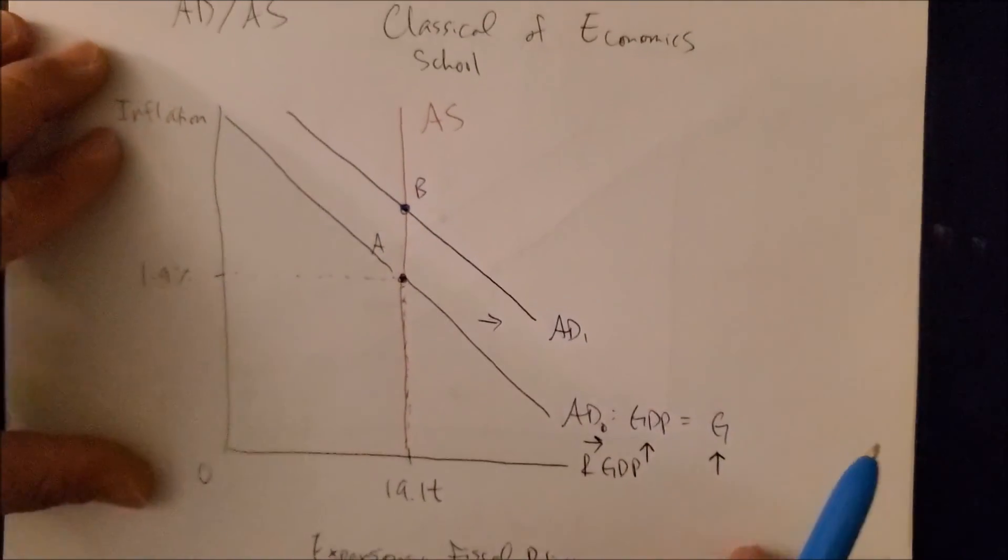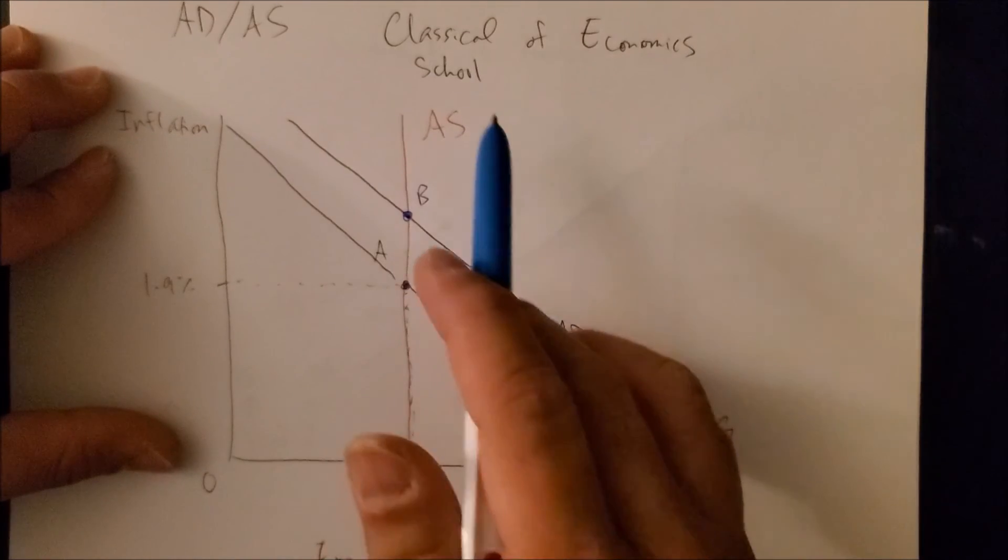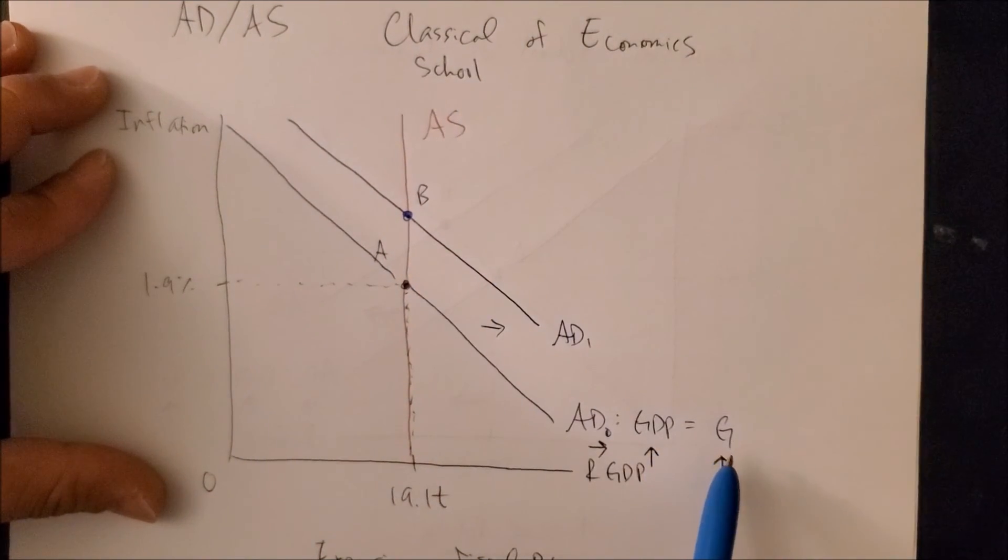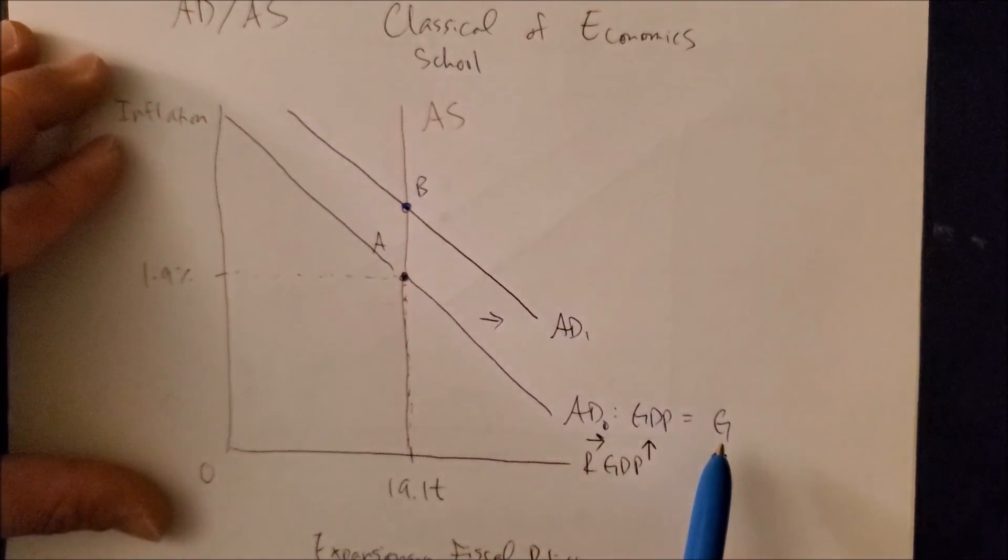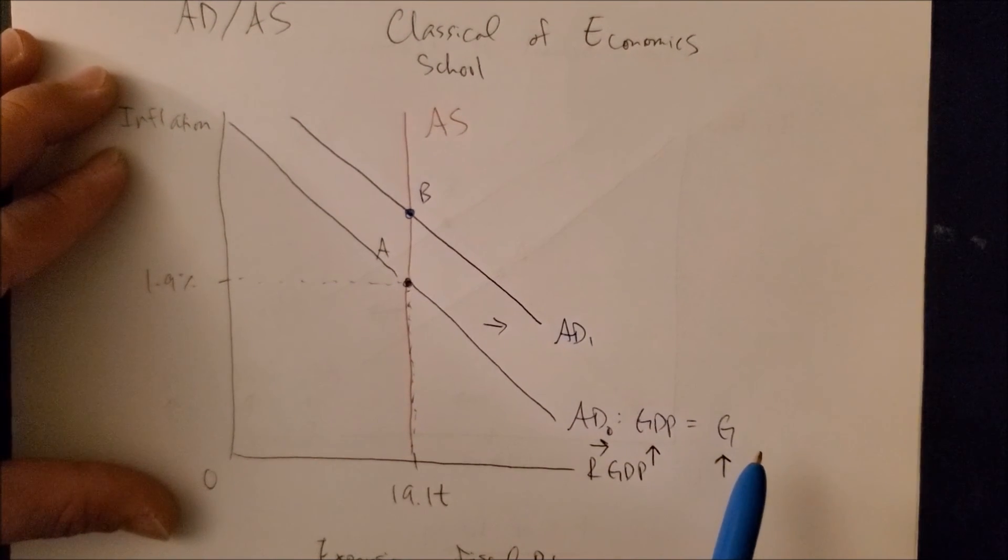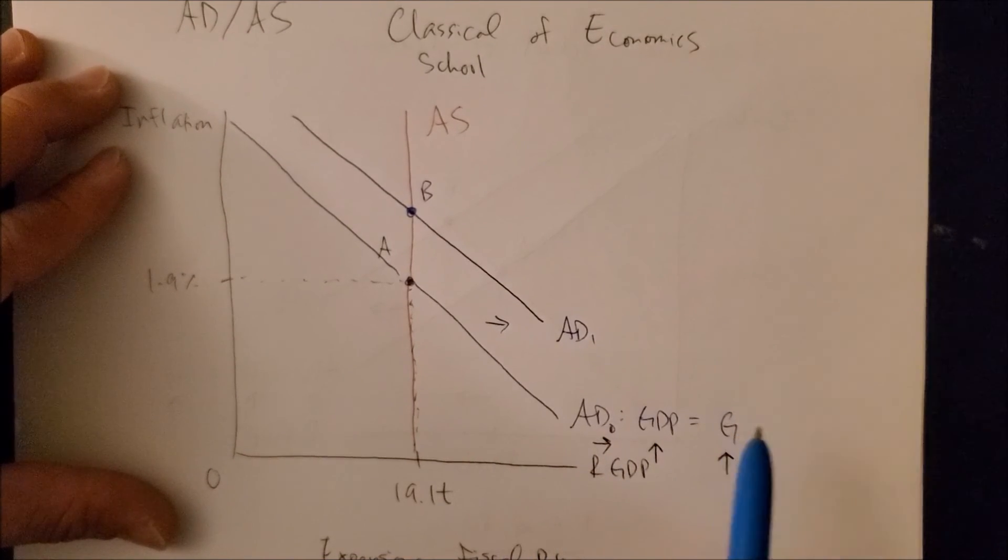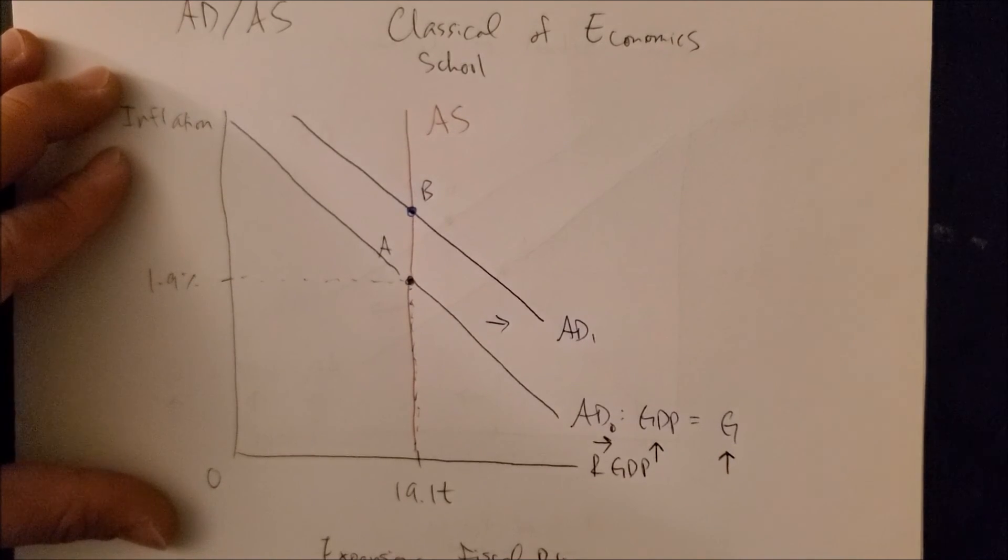And this is why for economists who are part of the classical school, they believe that having any government intervention is not the correct way, but rather to allow markets to readjust itself over time. And that's why we have, in the case of AD-AS curve, both schools of economics present on the SRAS graph.